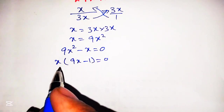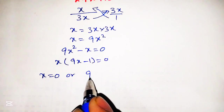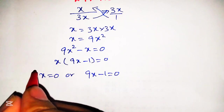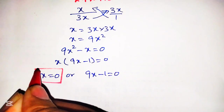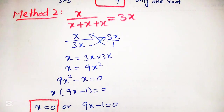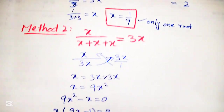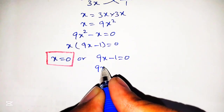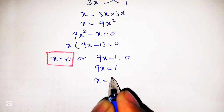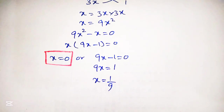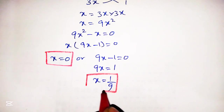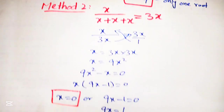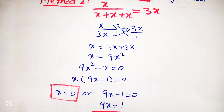Taking x common, we can write it as x(9x minus 1) is equal to 0. From this, x is equal to 0, or 9x minus 1 is equal to 0. So x is equal to 0 is the first root found by method number 2, which we did not find using method number 1. For the second root, we solve 9x minus 1 equal to 0, giving 9x equal to 1 and x equal to 1 over 9. This is the second root, which we also found from method number 1. So we have found two roots.